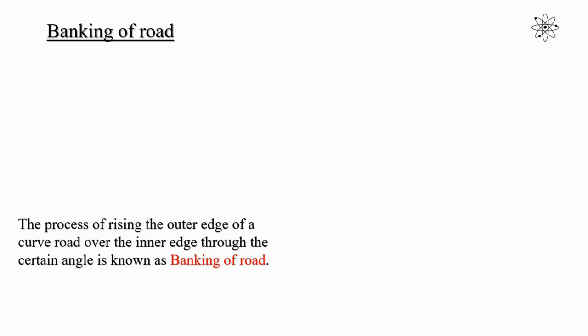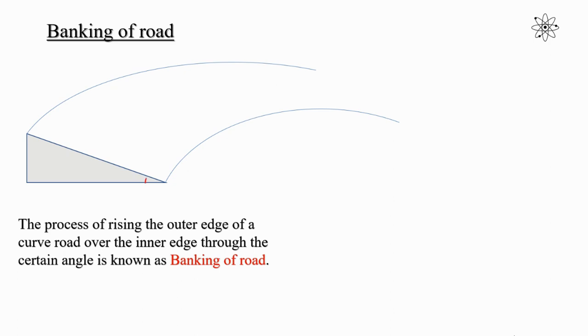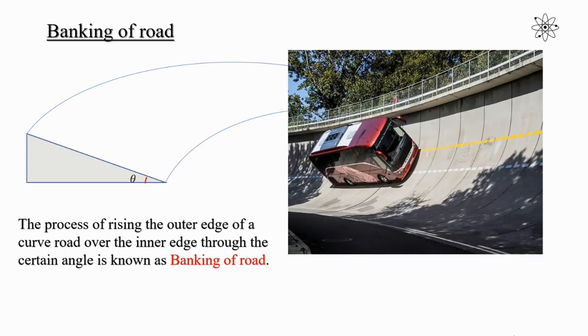Hello students. In a series of applications of uniform circular motion, this is our fourth video. In this video we are going to discuss banking of roads. The process of raising the outer edge of a curved road over the inner edge through a certain angle is known as banking of road. In this picture you can see a bus is moving on a banked road.